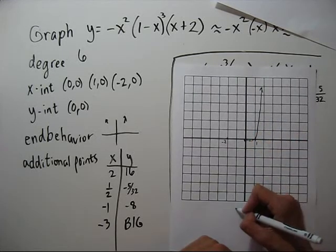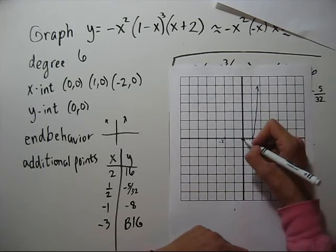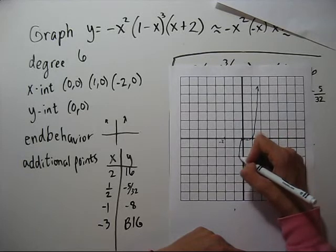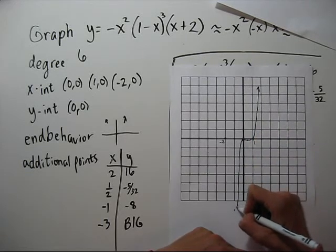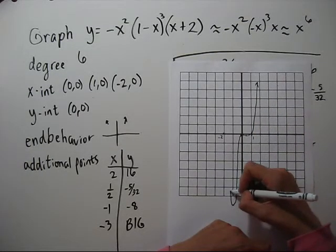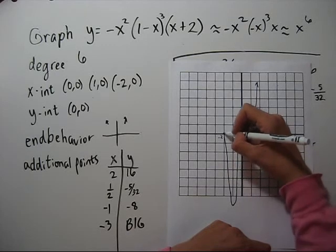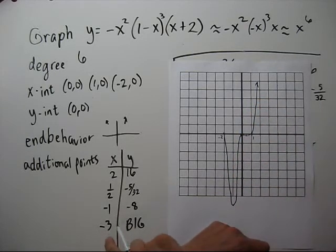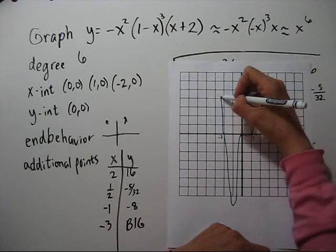Negative one, we're going down to negative eight. So this goes down quite quickly. And negative three is really, really big. So we're going up quite steeply.